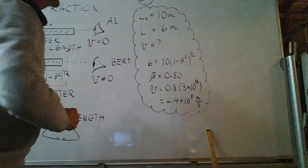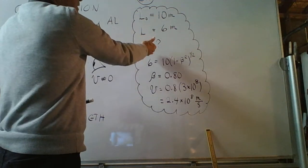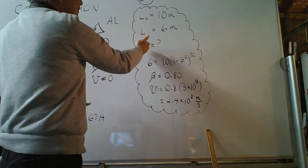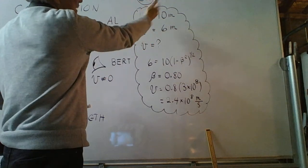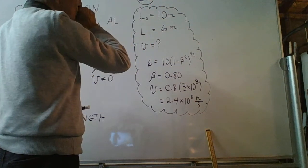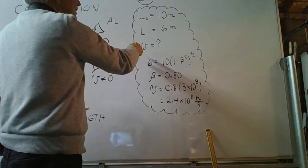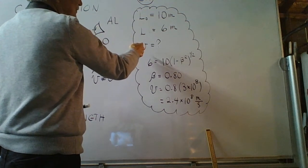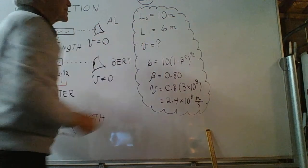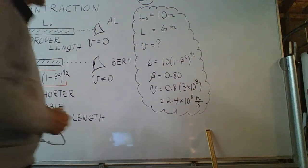We wish to determine what must be the speed of the moving observer relative to this object. Maybe it's another table. In order that the correct table length for the moving observer is 6 meters.